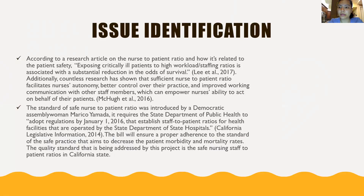The standard of safe nurse-to-patient ratios was introduced to the Democratic Assembly by Assemblywoman Mariko Yamada. It requires the State Department of Public Health to adopt regulations by January 1st establishing staff-to-patient ratios for health facilities operated by the State Department of State Hospitals, according to California legislative information. The bill will ensure proper adherence to the standard of safe practice, aiming to decrease patient morbidity and mortality. The quality issue being addressed by this project is the safe nursing staff-to-patient ratios in California.